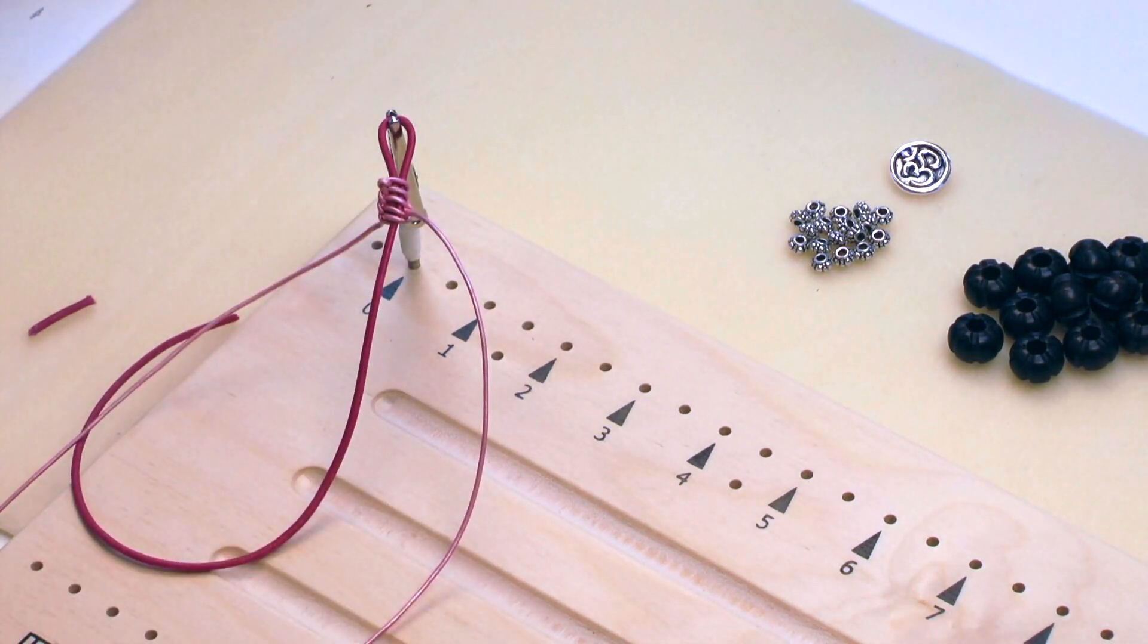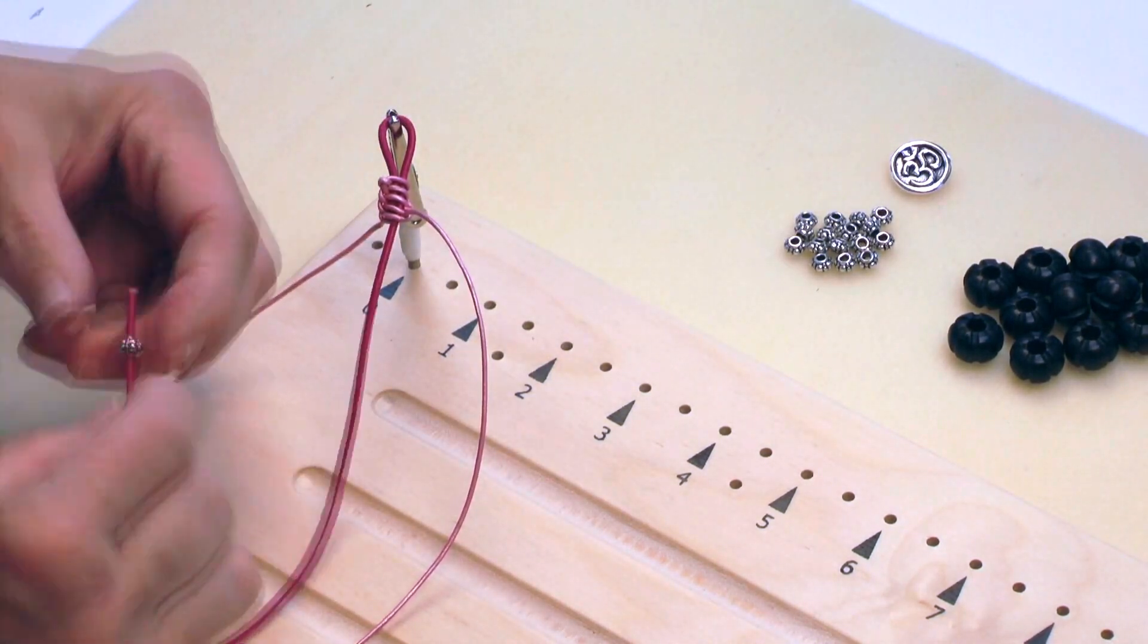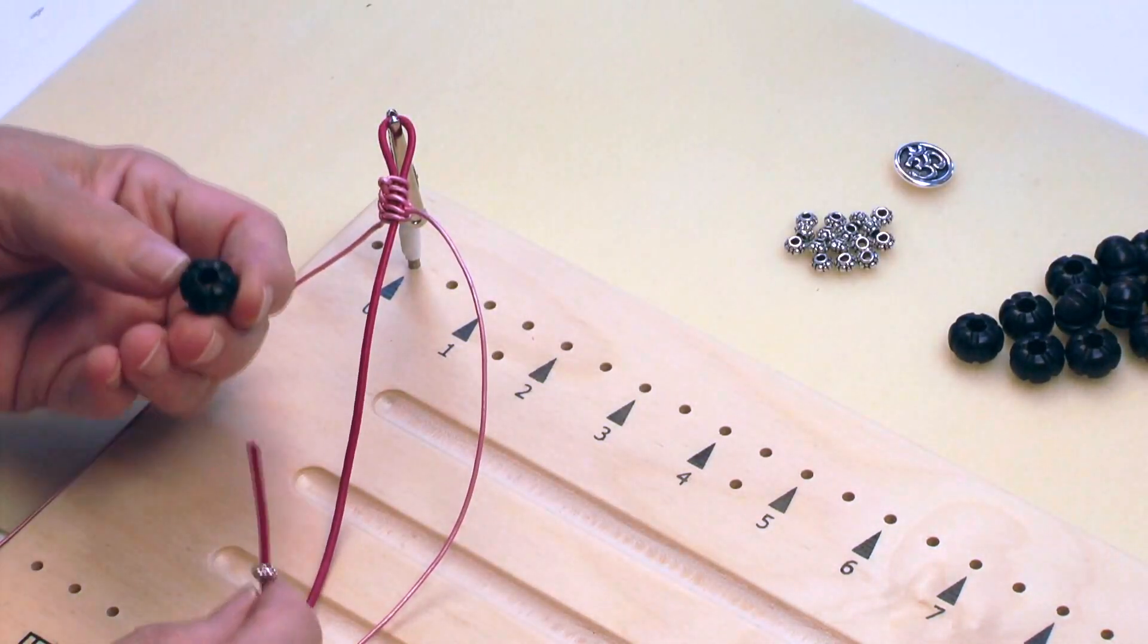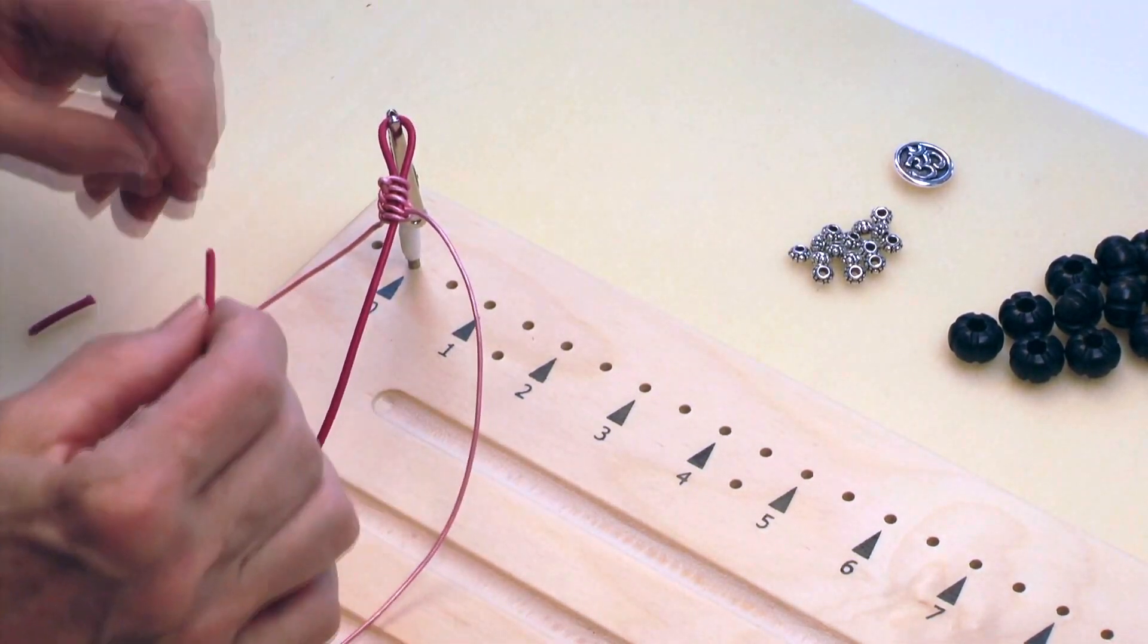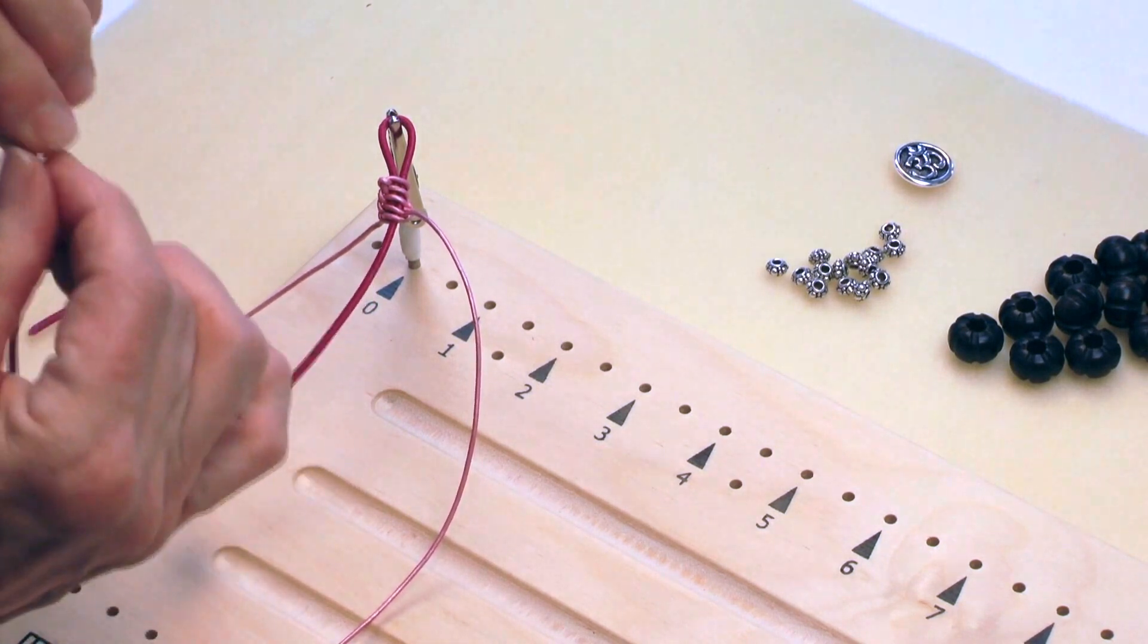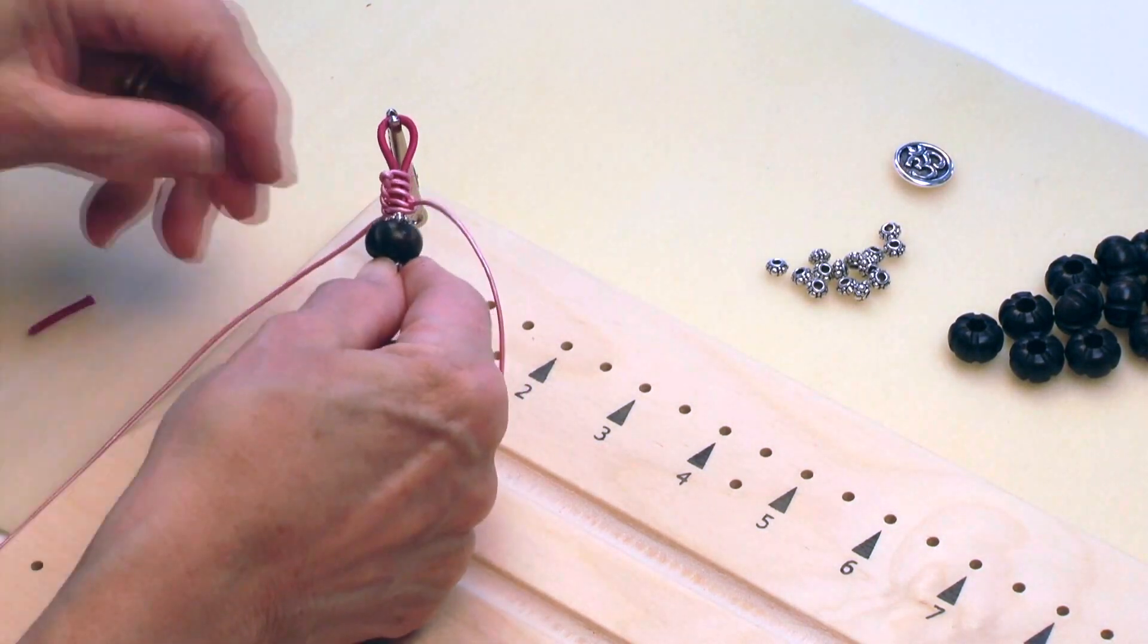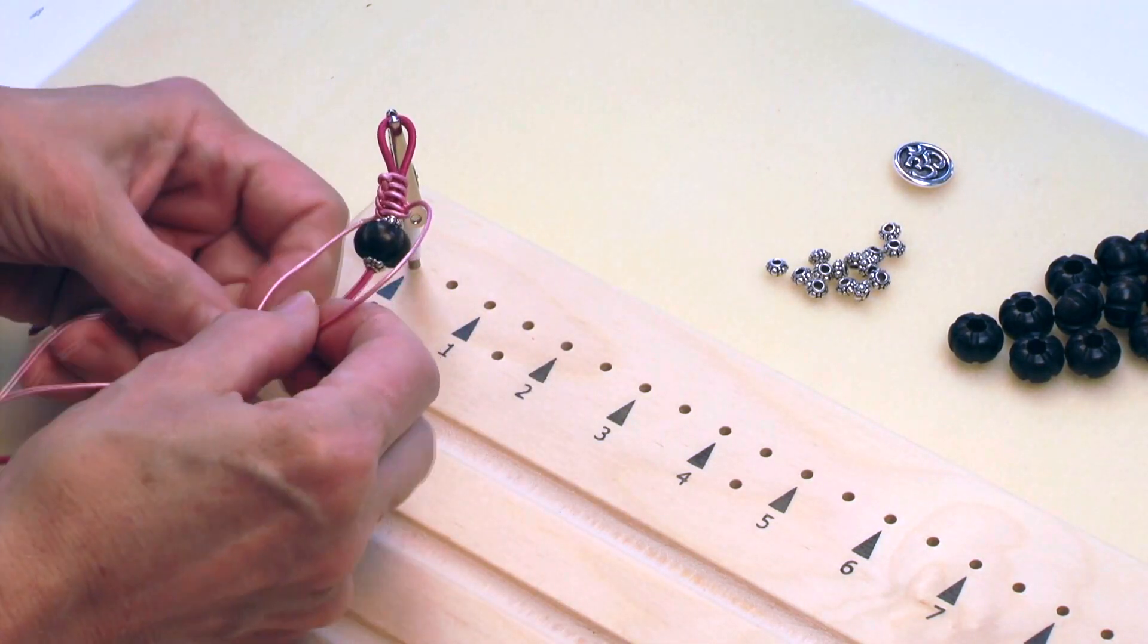Now I can start to add beads. And I've decided to use a sequence of a silver bead, a large hole tiger ebony bead, another silver bead. I'm going to push these up. And I'm going to continue to knot, again, always from the same side.